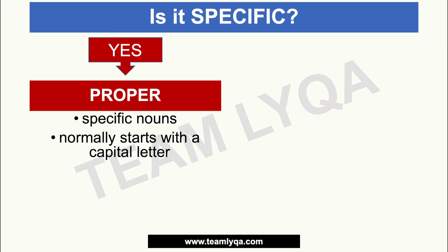For example, if we're talking about a person — if we say 'boys,' that is general because many people can fit under the name 'boys.' But if we say a specific name, like Roger — with a capital R — then Roger is a specific noun. It's a specific name of a person.